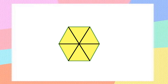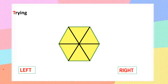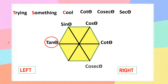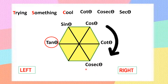Let me reiterate: starting from the tan theta position, going left: tan theta, sine theta, cos theta — and all C's to the right side: cot theta, cosecant theta, and secant theta. The order is tan, sin, cos, cot, cosec, sec. I hope you remember this perfectly.